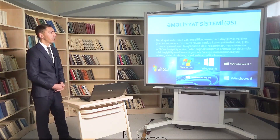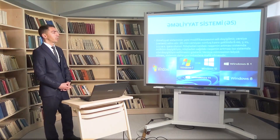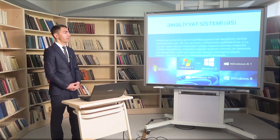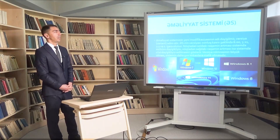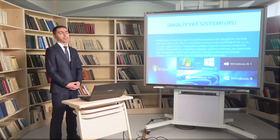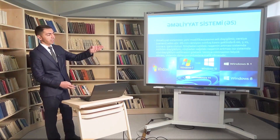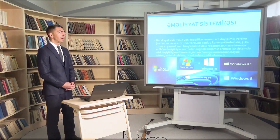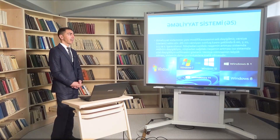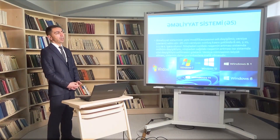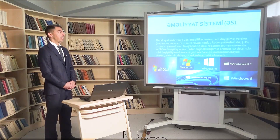Burada bir məsələyə diqqət çatdırmaq istərdim. Windows 8, Windows 8.1 və əvvəlki versiyalarda 3, 3.1 kimi versiyaları qeyd etdik. Əməliyyat sisteminin modifikasiyasının yazılışı 10-luq kəsir şəkilində olur. Nöqtədən soldakı rəqəm adətən sistemdə mühüm dəyişikliyin olmasını, sağdakı rəqəm isə cüzi dəyişikliyin olmasını göstərir.